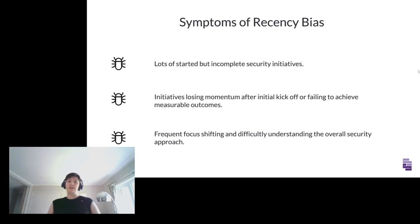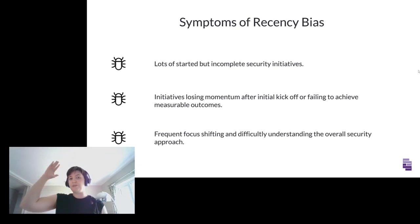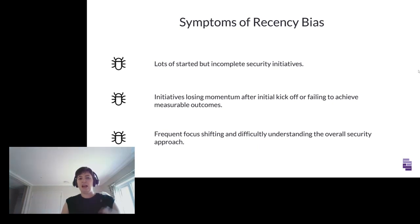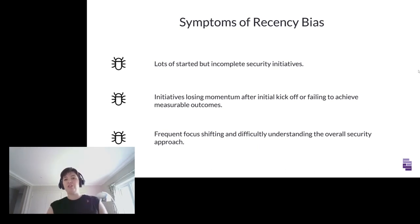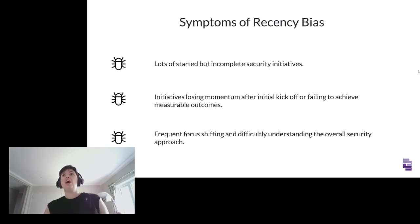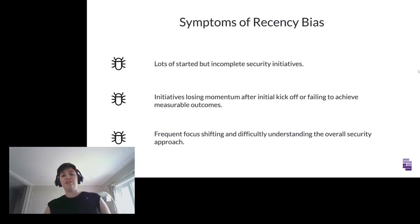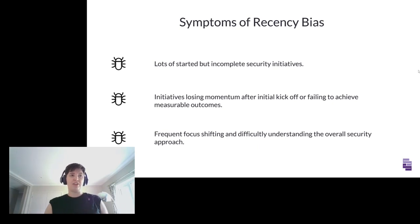Self-assessment for recency bias: Do you have lots of started but incomplete security initiatives — a security backlog where not much gets completed? Are initiatives losing momentum after initial kickoff or failing to achieve measurable outcomes because you keep switching to new things? Frequent focus-shifting and difficulty understanding your overall security approach — a 'magpie' approach chasing shiny things — is very dangerous for security. It creates a massive backlog of initiatives that need finishing, spending a lot of money without actually achieving the security outcomes needed.